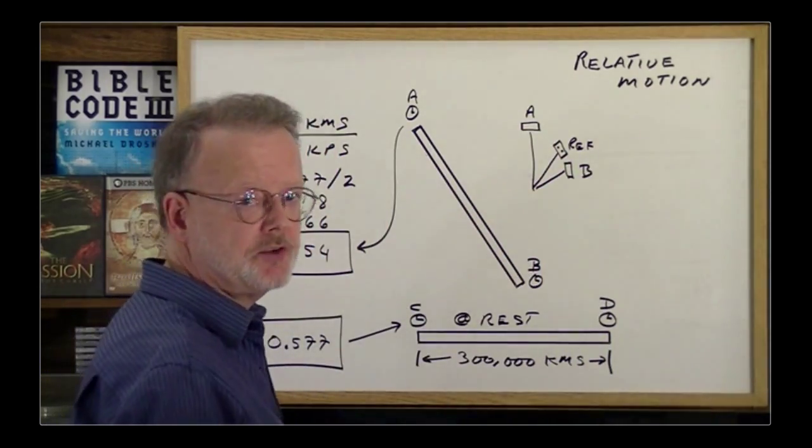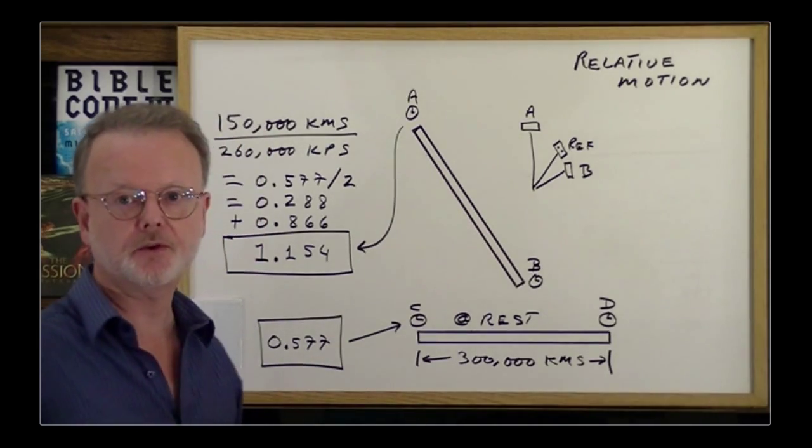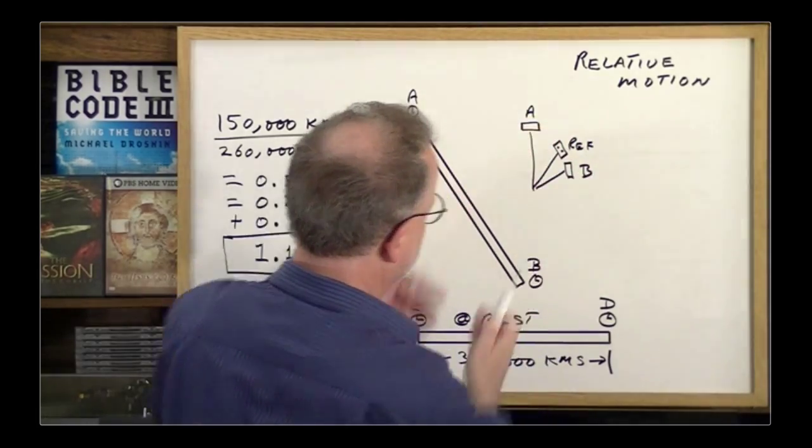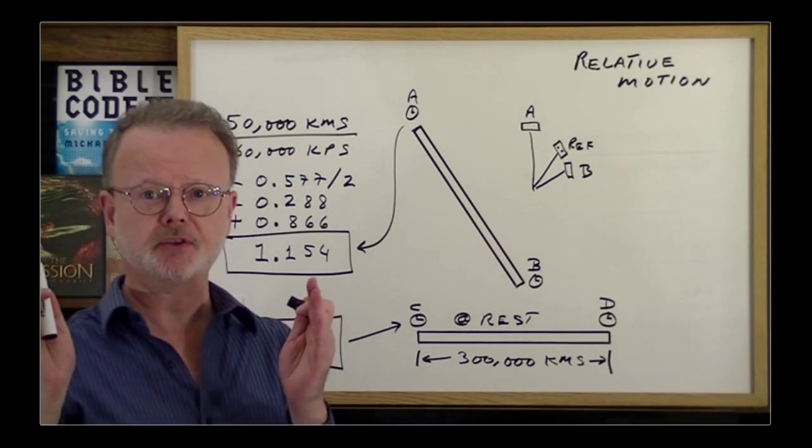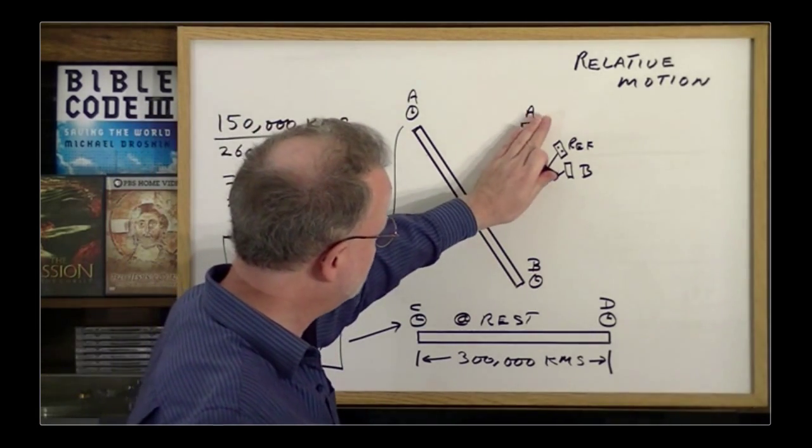So, let's say that A is at rest in space. This one, Mr. Reference, is moving at the usual 260,000 kilometers per second. These were all 300,000 kilometers long. So, when A looks at Mr. Reference, he sees Mr. Reference has shrunk to half length, and his clocks are ticking at half speed.